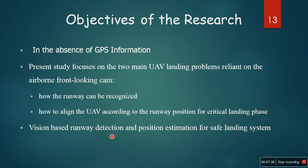The objectives of this research: In the absence of GPS information, the present study focuses on two main UAV landing problems reliant on the airborne front-looking camera — how the runway can be recognized, and how to align the UAV according to the runway position for the critical landing phase. We take the image from the camera installed on the nose of the UAV, detect and recognize the runway, and then align the UAV with the runway for landing.